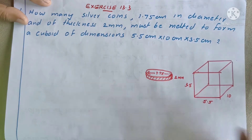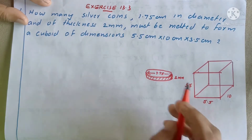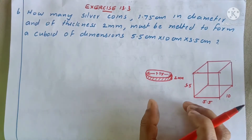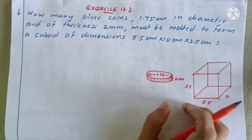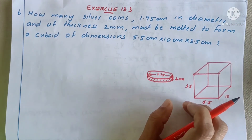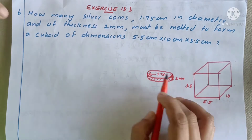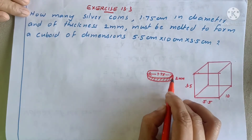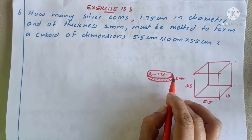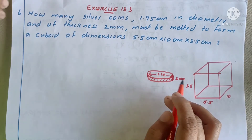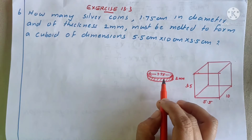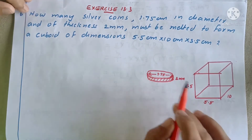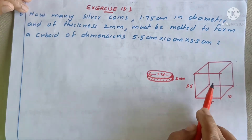The measurements are in centimeters. The diameter is the width of the coin, and the thickness is the height. This is the main shape. The silver coin is melted, and this gives us the dimension — the dimension is the length of the cuboid.